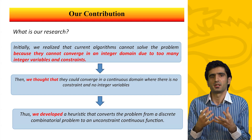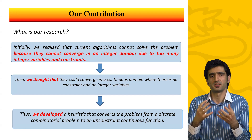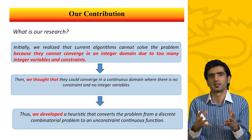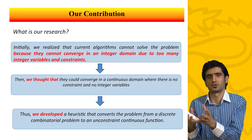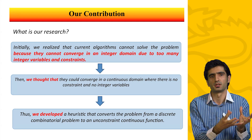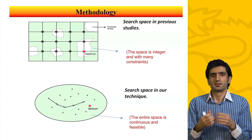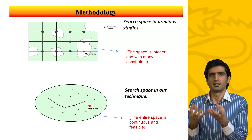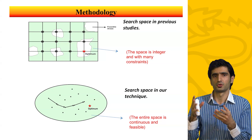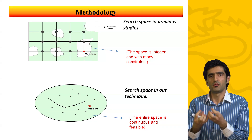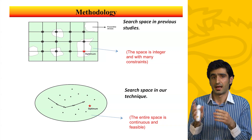Our idea was that algorithms could converge in a continuous domain when there are no constraints and no integer variables. So we convert the problem from a discrete combinatorial problem to an unconstrained continuous function by a novel heuristic. This means that instead of trying to converge in a complex integer space like the photo at the top, we can now converge in a continuous space with no constraints, quite like the photo at the bottom.